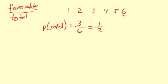So the probability of rolling an odd number on a single roll of a six-sided die is one-half, and that should make sense because half of the numbers are odd and the other half are even.